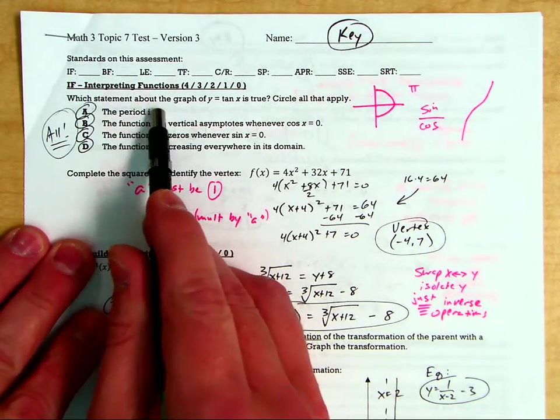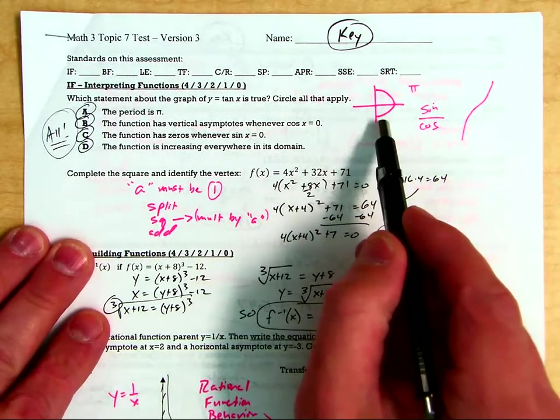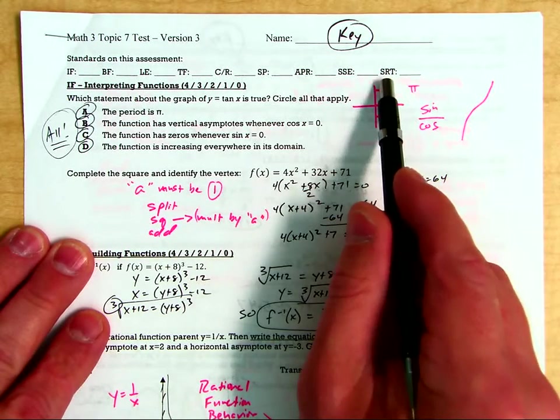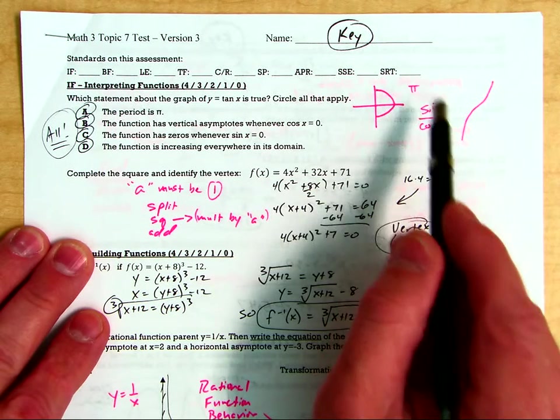What is true about the graph of tangent function? It's actually all of these are true. You got to remember the concept is how tangent is defined. The period is only pi. The period is only pi for tangent and cotangent.